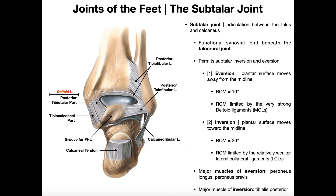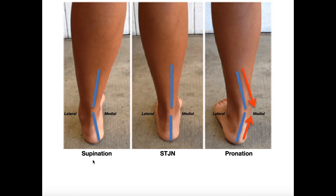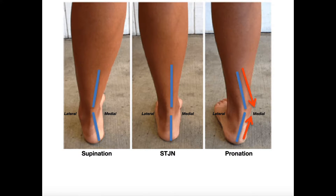Whereas supination and pronation are composite movements. If we look at supination, we're actually looking at three or more combined movements. Depending on the list that you're looking at, you can look at three or four. This is a combination of movements, and actually within supination, we actually have subtalar inversion.